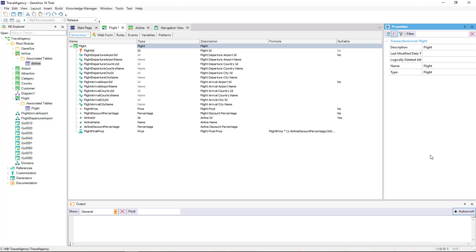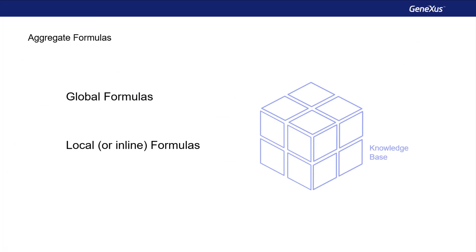Formulas of this type, which make a calculation obtained from the data of the record in which we're positioned — just one — and occasionally of the associated records through the extended table, are usually called horizontal formulas. Now we will see another type of formula called aggregate formulas. We will explain them by defining examples of global formulas — that is to say, the corresponding calculations will be defined in relation to attributes, and therefore they will not be created as physical fields. They may also be assigned locally in a certain section of an object; we will see this in another video.